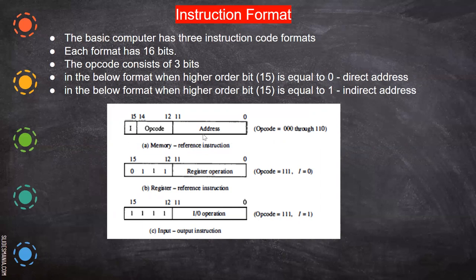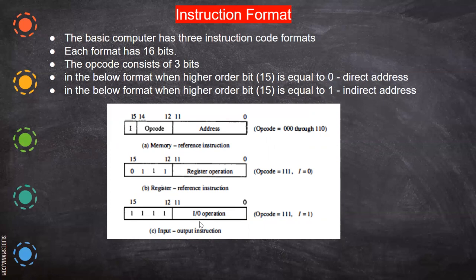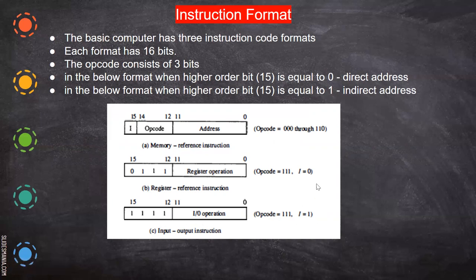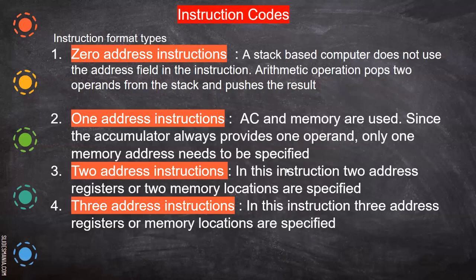If the opcode is from 000 to 110 and bit 15 is zero, those are memory reference instructions — for example, ADD means adding a value from memory. If the opcode is 111 and bit 15 is zero, it is a register reference operation. If the opcode is 111 and bit 15 is one, it is an I/O operation. So by modifying that one bit combined with the opcode range, you can distinguish between memory reference, register reference, and I/O operations.